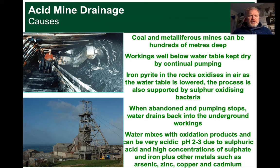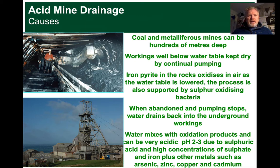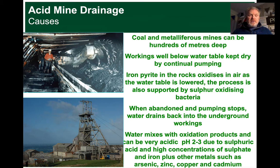When water then gets back into these underground workings after working stops, we get the water mixing with the weathering products of pyrite and becoming very, very acidic - a pH of maybe 2 or 3. That acidic groundwater can then dissolve a lot of metals into it. Metals like arsenic, zinc, cadmium, and lead can all dissolve into this acidified water.